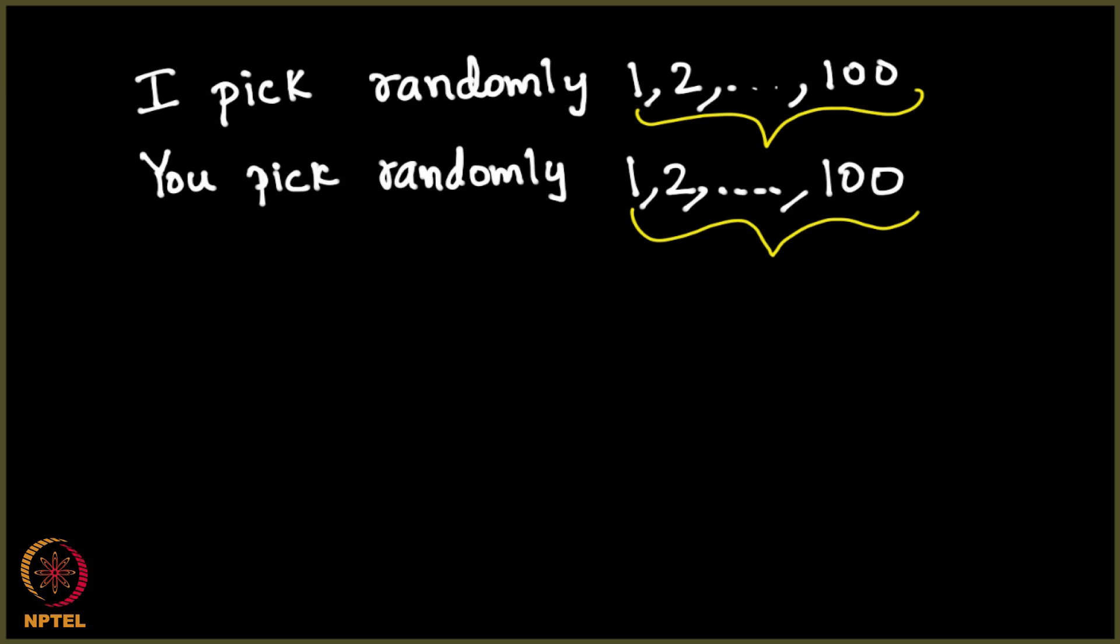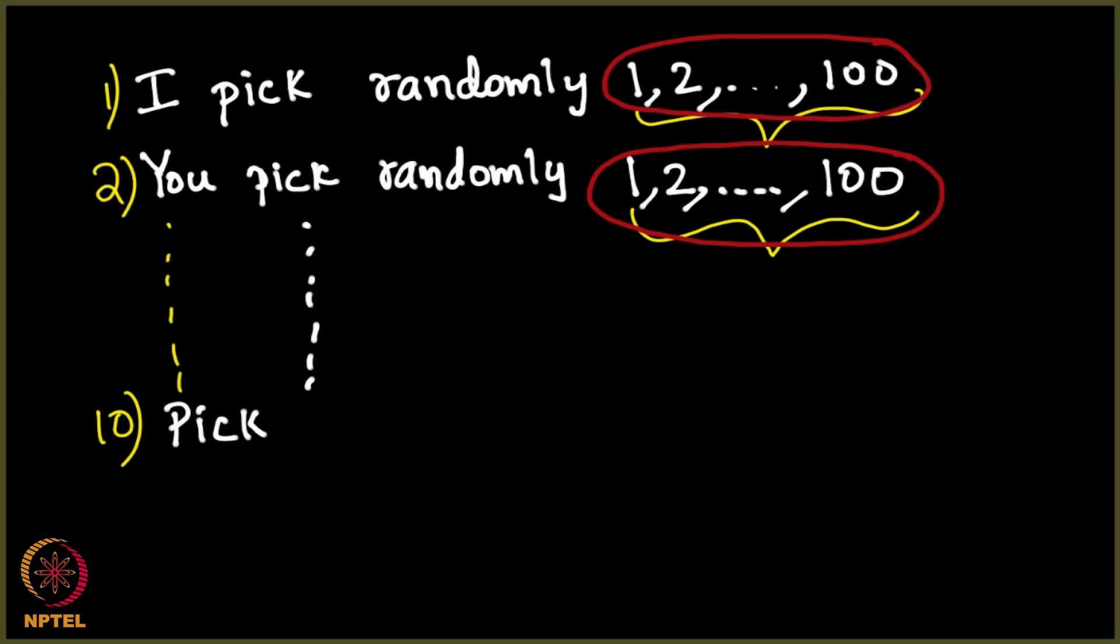Now, when I pick a number randomly here from 1 to 100, I can pick any number, it could be 1, it could be 2, it could be 3, it could be 50, 60, 70, 73, 89, 100, whatever I want. When you pick as well you will have the liberty to pick any number you want. Let us assume 10 such people pick, I am the first person, you are the second person, so on and so forth, some 10 people pick like this, 10th person also picks a number from 1 to 100.